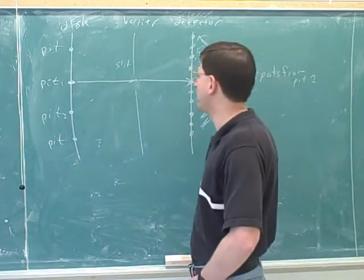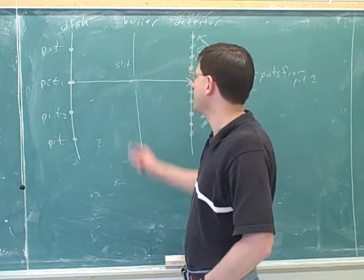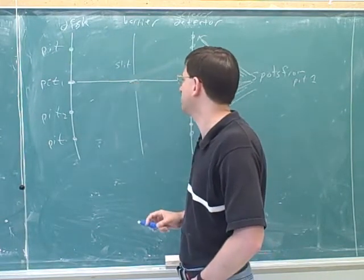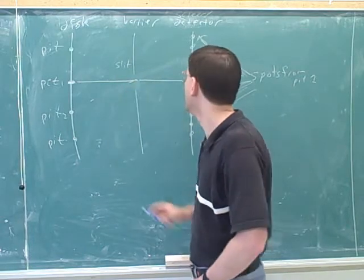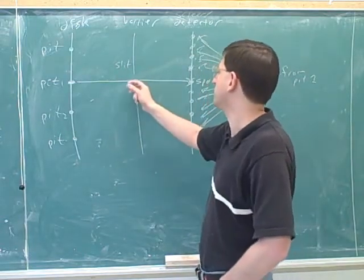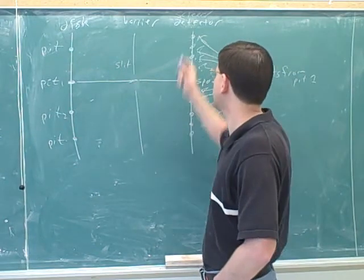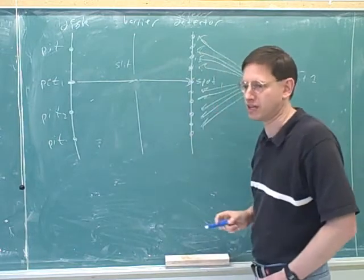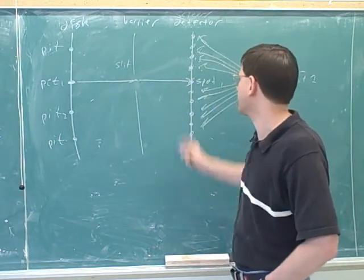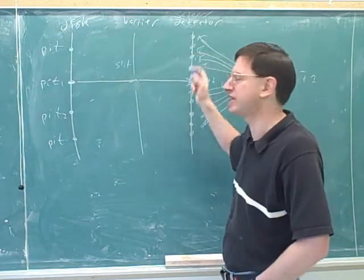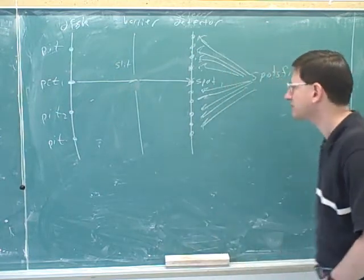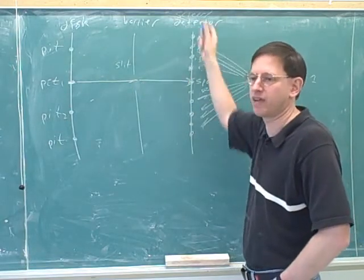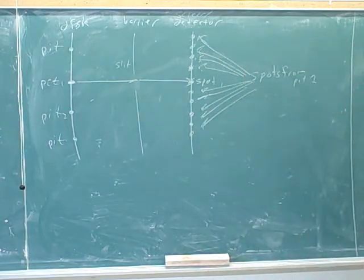Let me give a brief reminder of why that is. We can treat every point in this slit as a new point source of the wave — a new point source according to Huygens' principle. Sometimes those different point sources are going to interfere constructively on the screen, giving a bright spot, and sometimes they interfere destructively, giving a dark spot. Because light is a wave, it doesn't just give one spot — it gives a whole series of spots. That's the idea of diffraction interference.